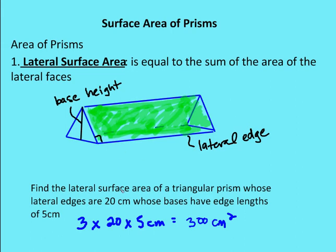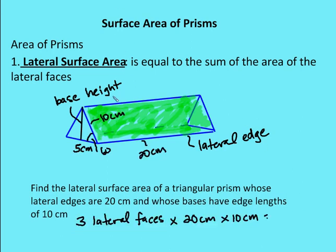Again, three lateral faces, 20 centimeters for the lateral edge, 5 centimeters for the base edge: 3 × 20 × 5 = 300 centimeters squared. Now if the base edge changes to 10 centimeters, each lateral face becomes 20 × 10 = 200 square centimeters, and times 3 gives 600 centimeters squared for the lateral surface area.